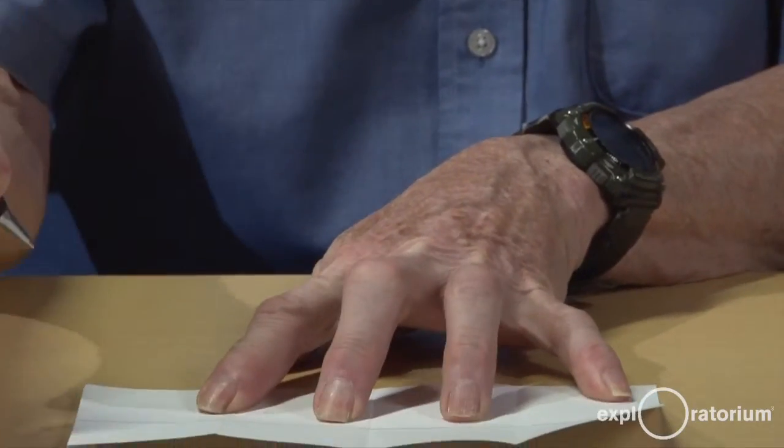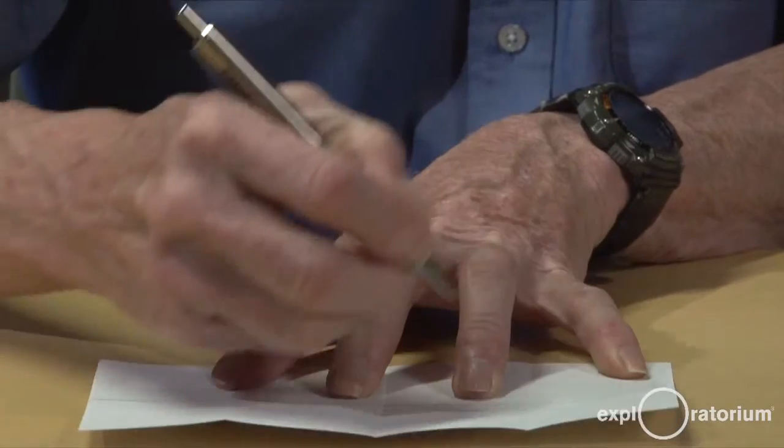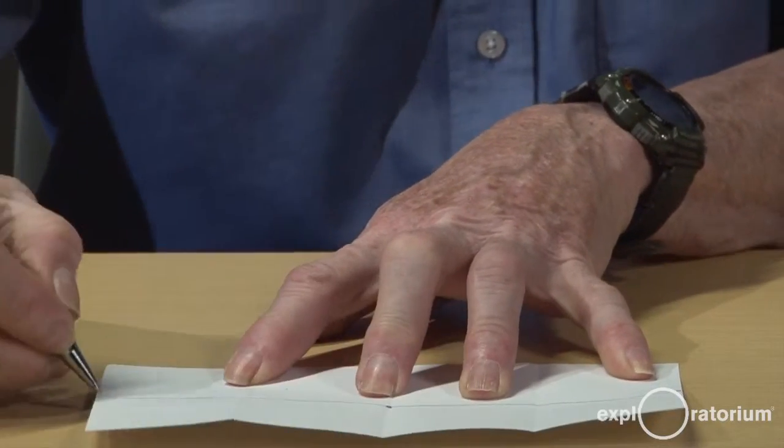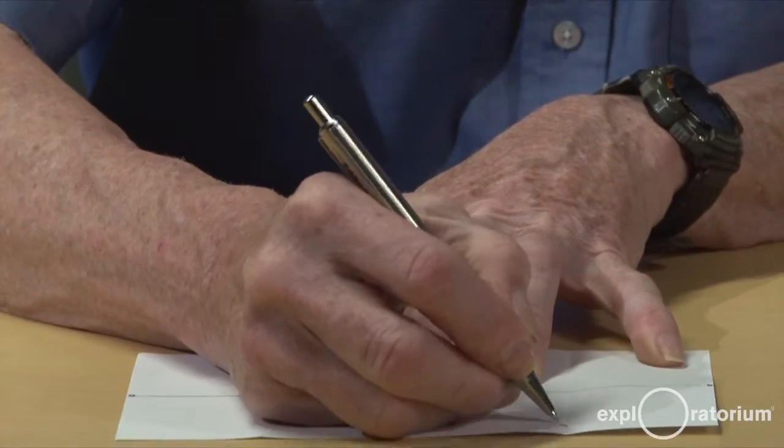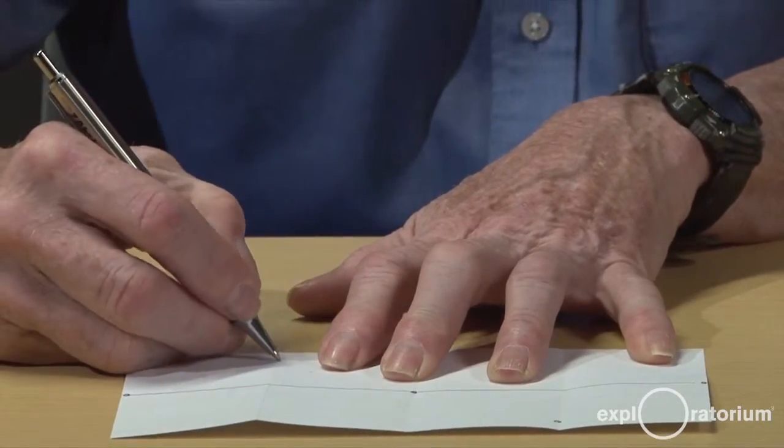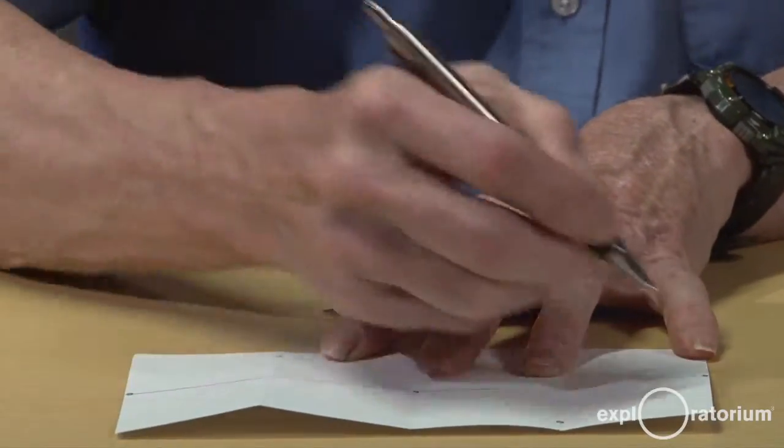Now I'll mark the places for my sine wave. Zero at one side, zero in the middle, zero on the other side. A maximum about a centimeter down from the top, a minimum about a centimeter up from the bottom.